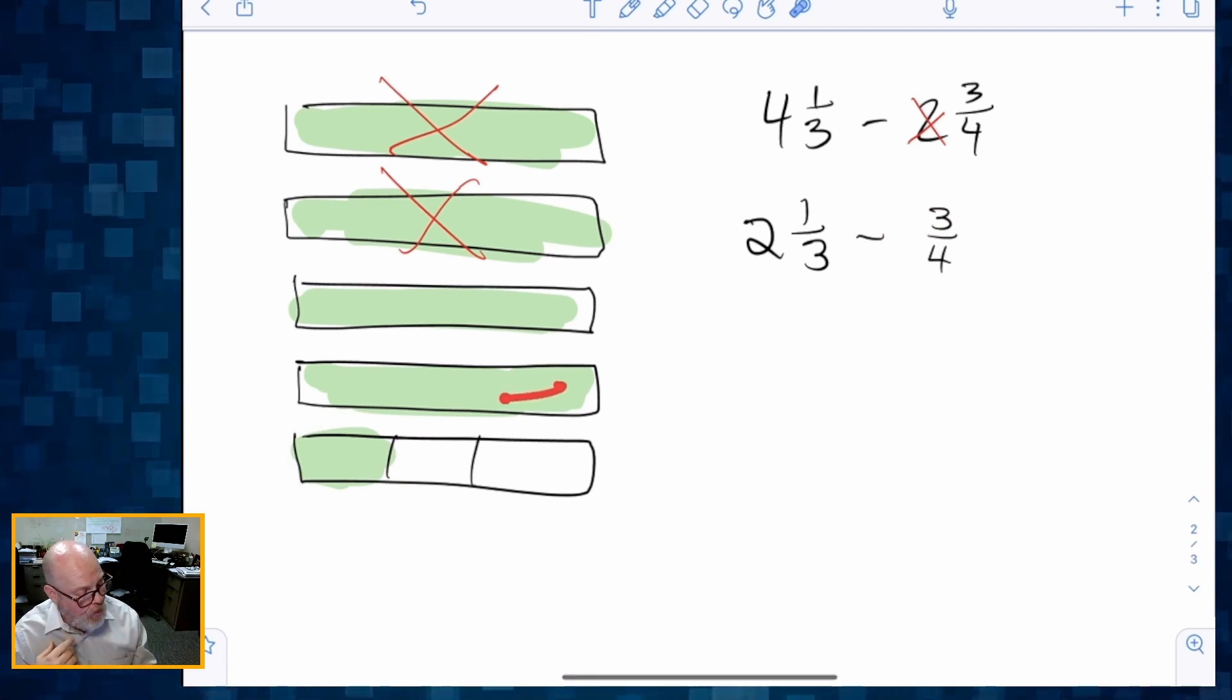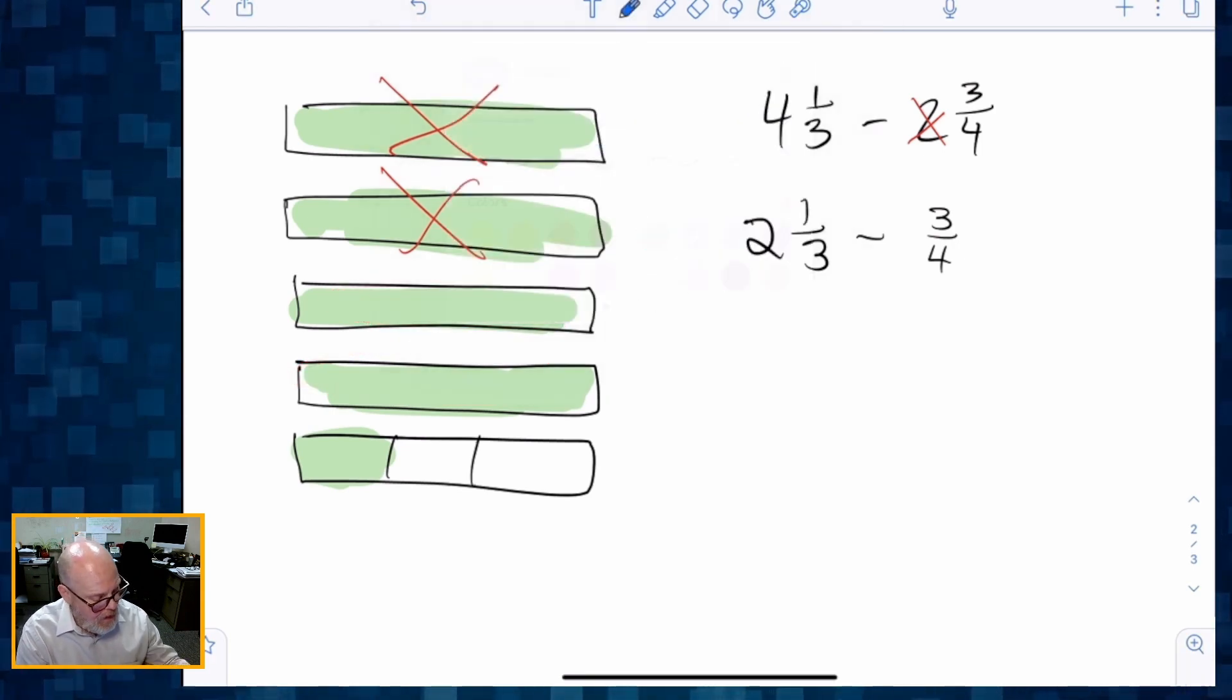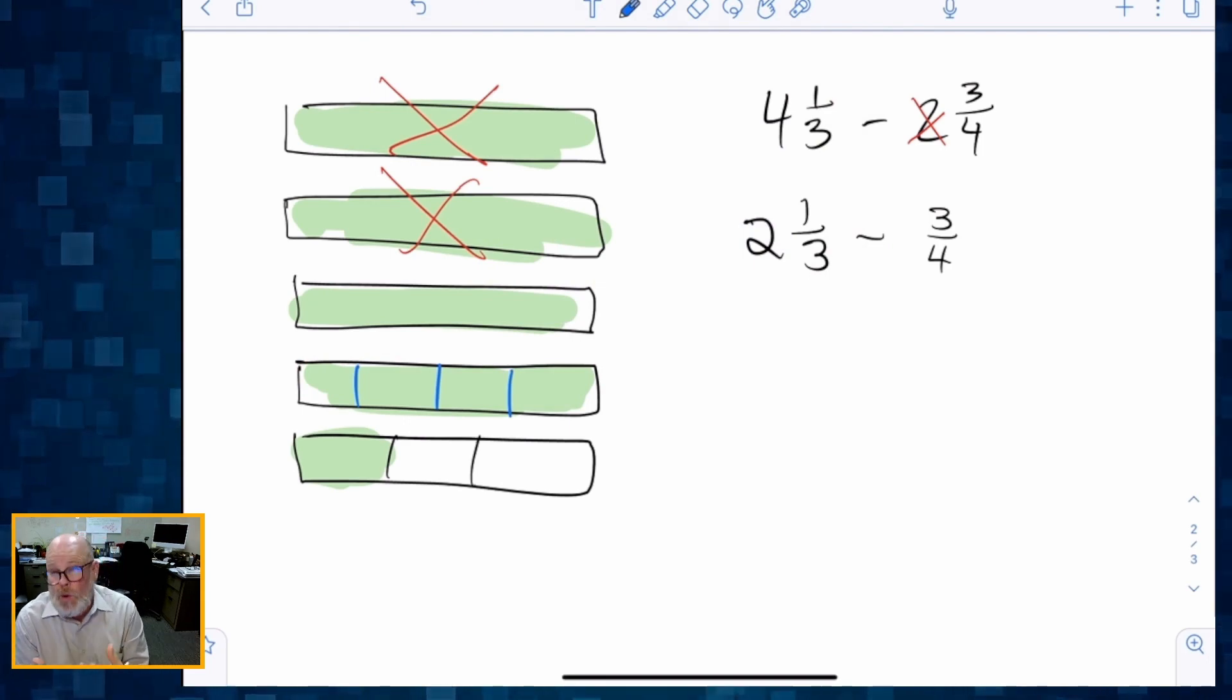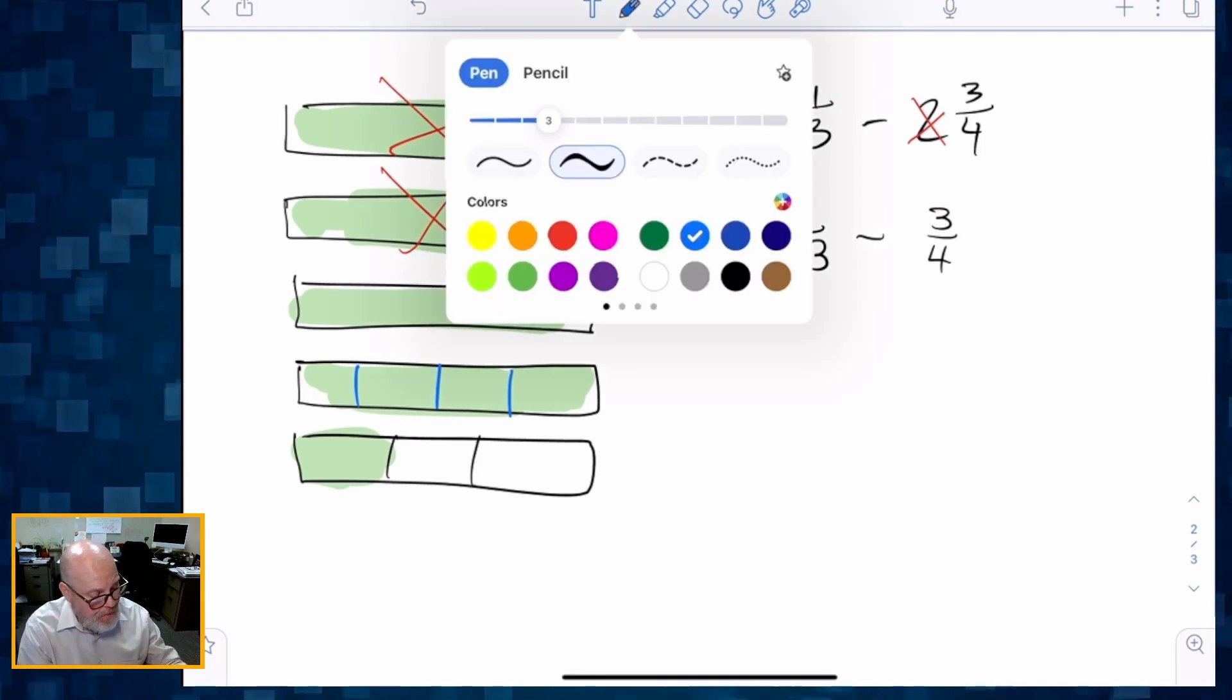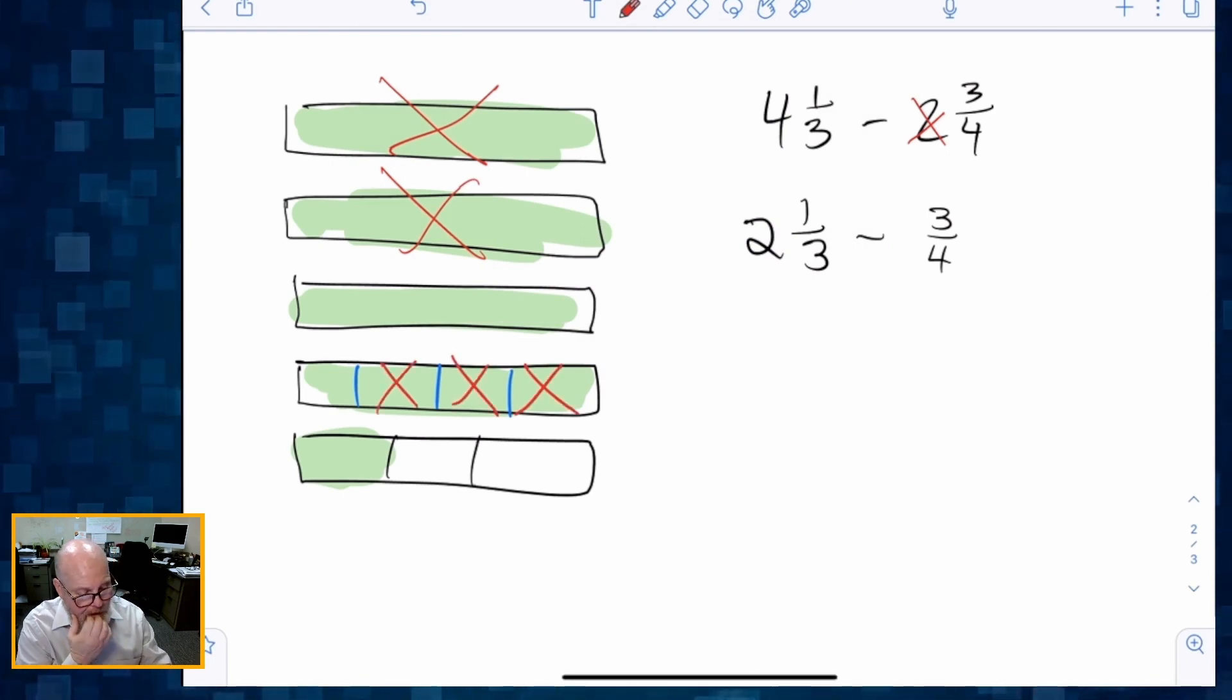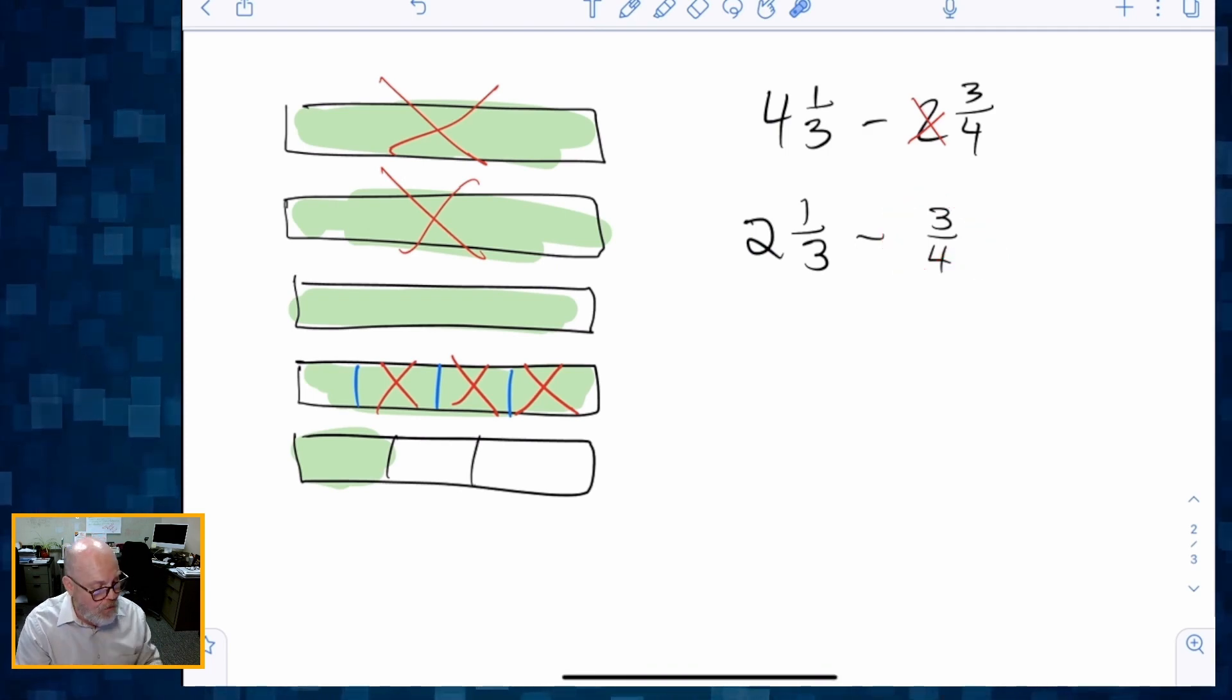Let's subtract that three fourths from either one of these holes. So I'm going to just cut one of these holes into fourths. And then I'm going to chop off or cross off three of those fourths, one, two, and three. So I have officially crossed off 2¾. And look what I've got left. So I'm officially done with crossing off the three fourths.